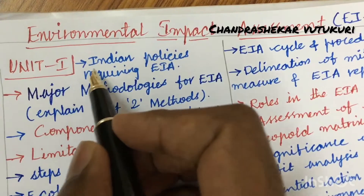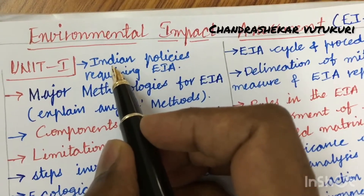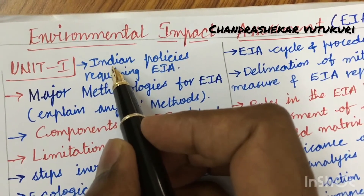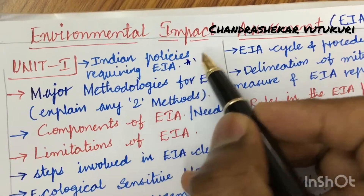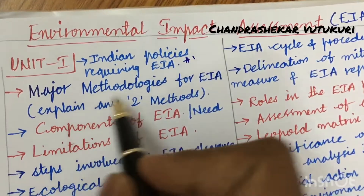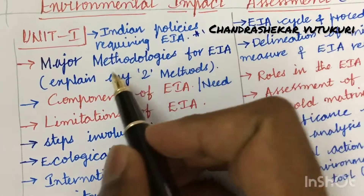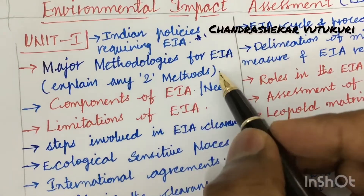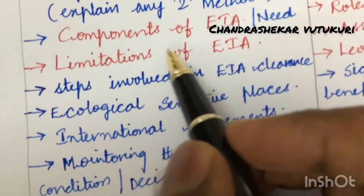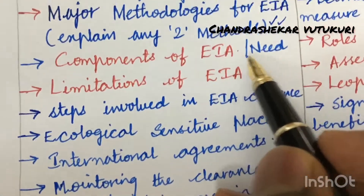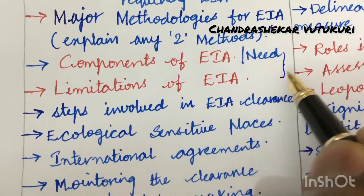The first and foremost gunshot question is Indian policies requiring EIA and the major methodologies for environmental impact assessment — explaining any two of its methods — which is asked several times. The components of EIA, need of EIA, and the limitations may also be one of the gunshot questions.